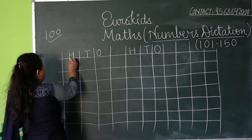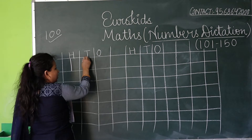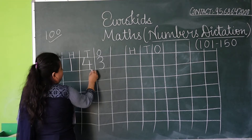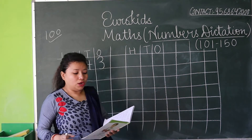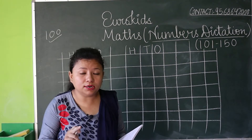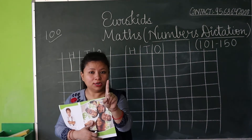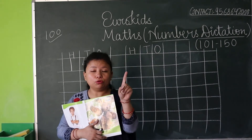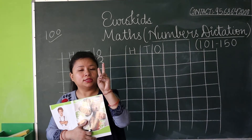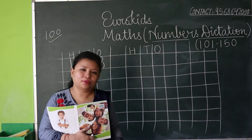Ma'am will tell you how to write 143: hundred means one, in 40 which sound comes? Four and three — 143. Now my next number is 133. Hundred means one, 30 means — tell me which sound comes in 30? Three, and again three — hundred-33, 133.